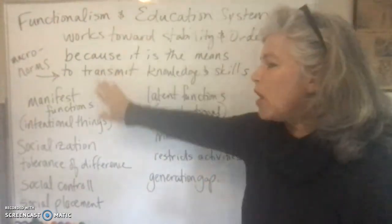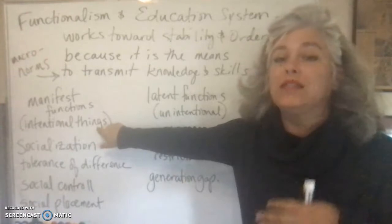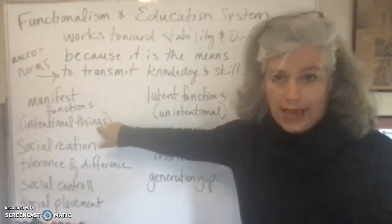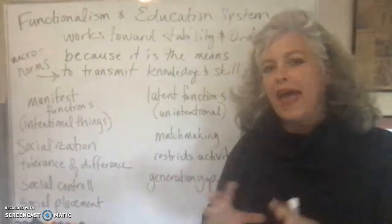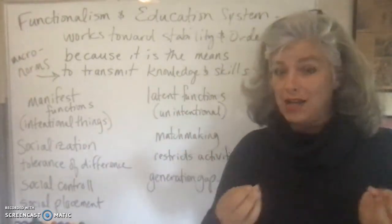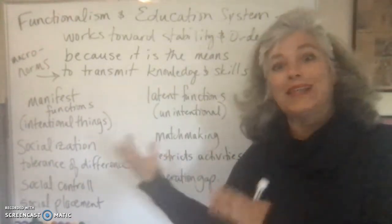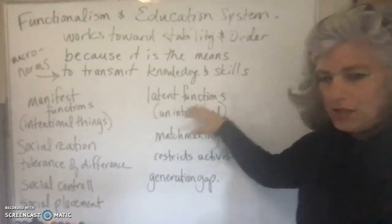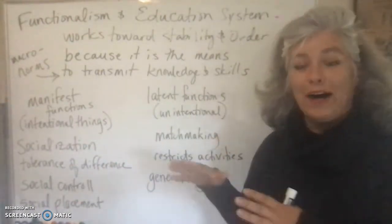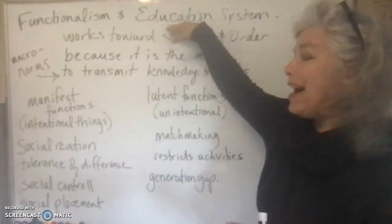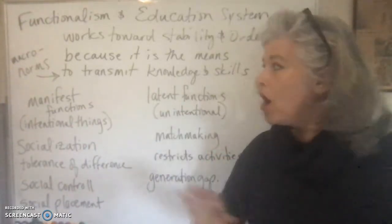A functionalist would say there are some intentional things that by design the education system is supposed to do in the USA, and those are called manifest functions — a term that a famous sociologist gave us. The intentional things that a macro scale part of the social structure does are called manifest functions. The unintentional things — the side effects that happen as a result of the way something is organized — are called latent functions. Manifest and latent functions: intentional and unintentional outcomes of any social institution.